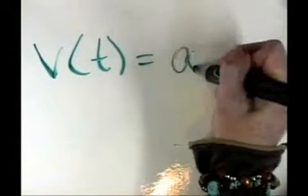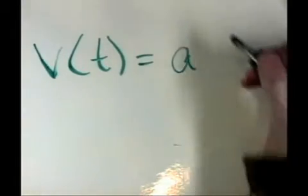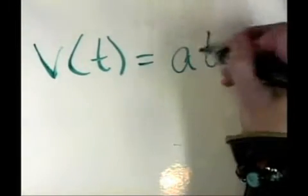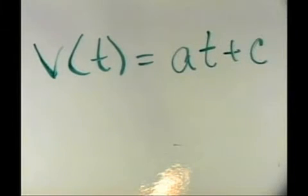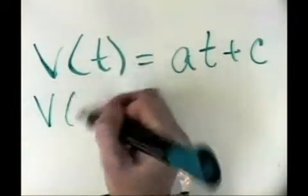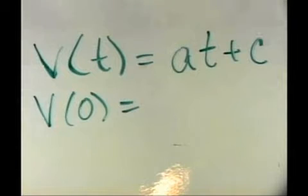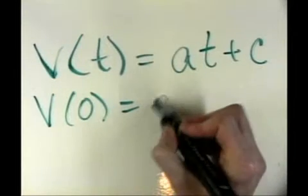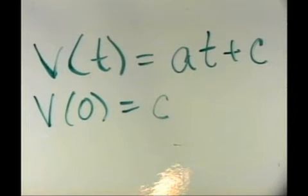Velocity is going to be A — whatever it is; if you're on Mars, it's different, but it's still constant — times T, plus some value C. I'm writing a little C, not a big C, because I truly mean to indicate there's a specific number there. It depends on what you're doing in the air. If this is given and we know the initial value, V of 0 is in fact C, because I'm plugging 0 in for T.